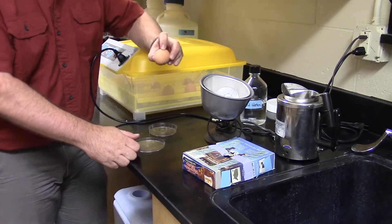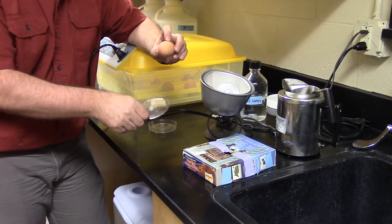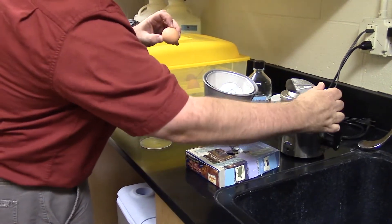The next part of this experiment, after we've located the embryo inside the egg, is to attach it firmly to a petri dish so that we can move it to a microscope.